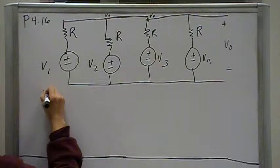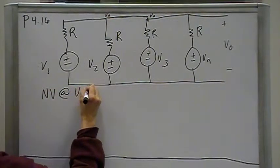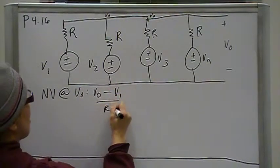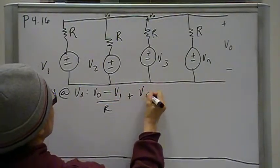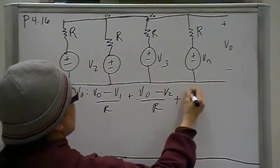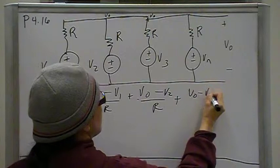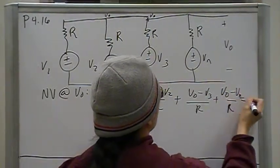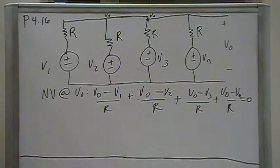So, node voltage at Vout is going to be Vout minus V1 over R, plus Vout minus V2 over R, plus Vout minus V3 over R, all of that equals zero. So, all I did was, the node voltage is the application of Kirchhoff's current law. All I said was, current in and out of the Vout node must sum to zero.